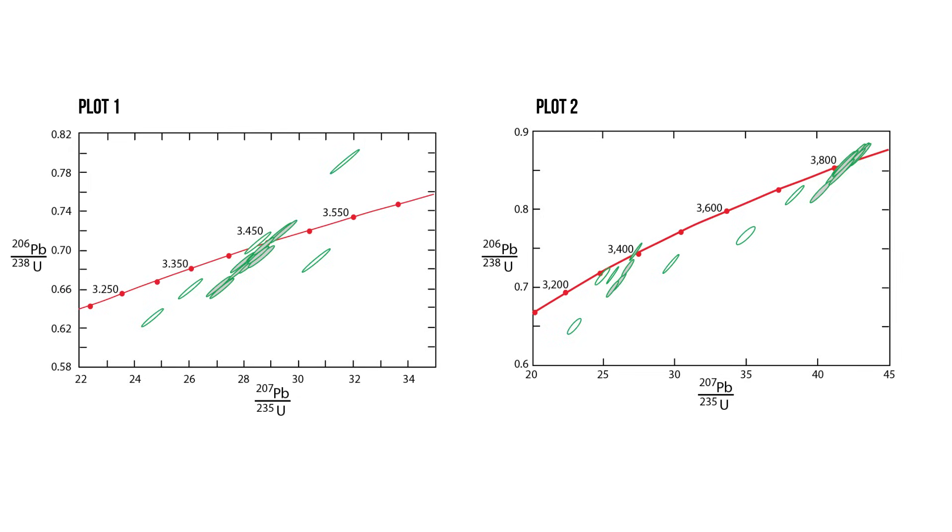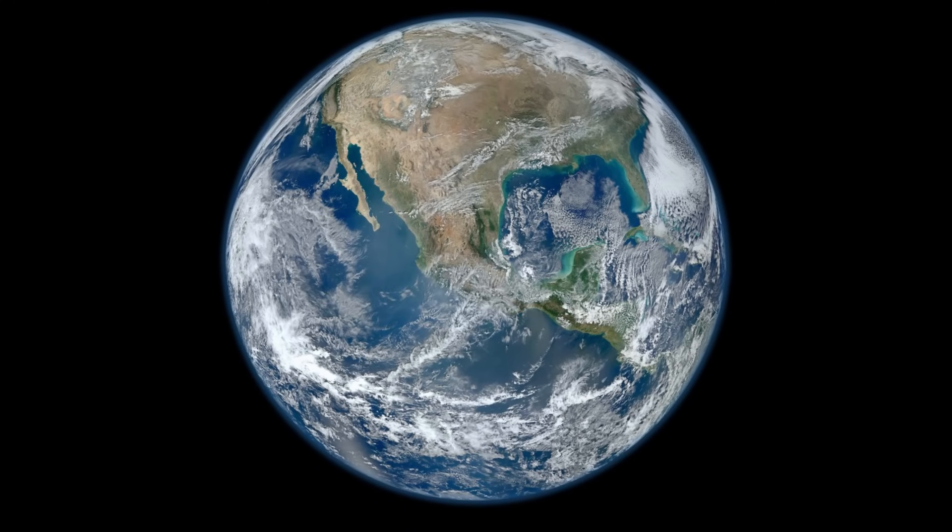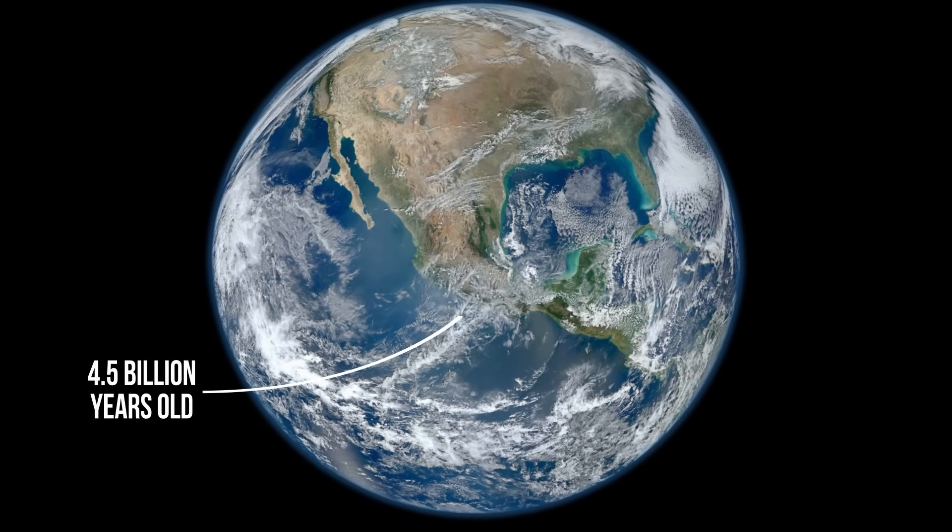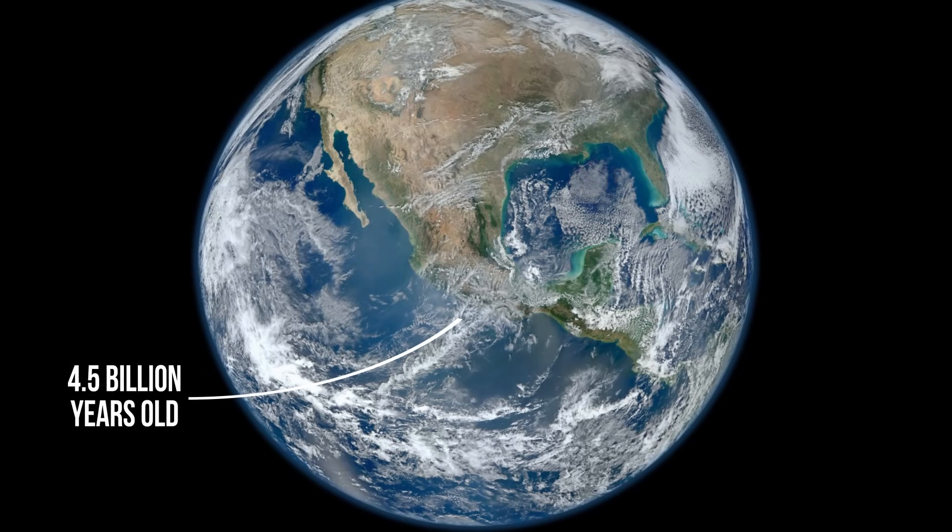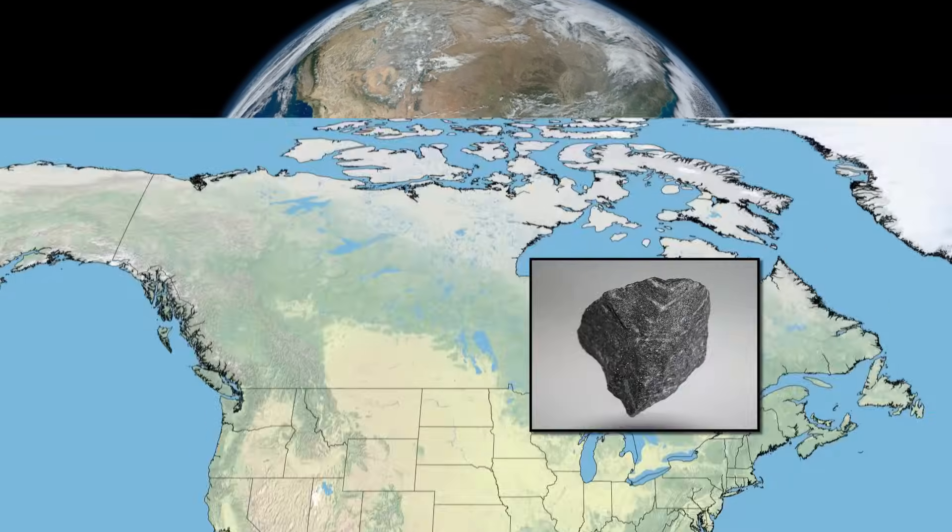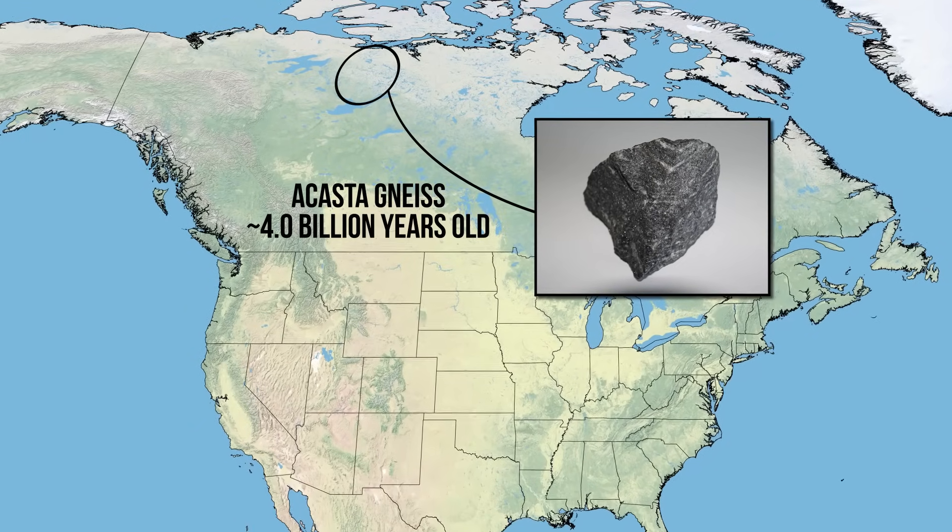We interpret the results for the plot on the left to indicate that the zircon in this rock crystallized 3.452 billion years ago. That's pretty old, but not as old as the Earth, which is 4.5 billion years old. And not quite as old as the oldest known rocks on Earth, which are in northern Canada and are about 4 billion years old.